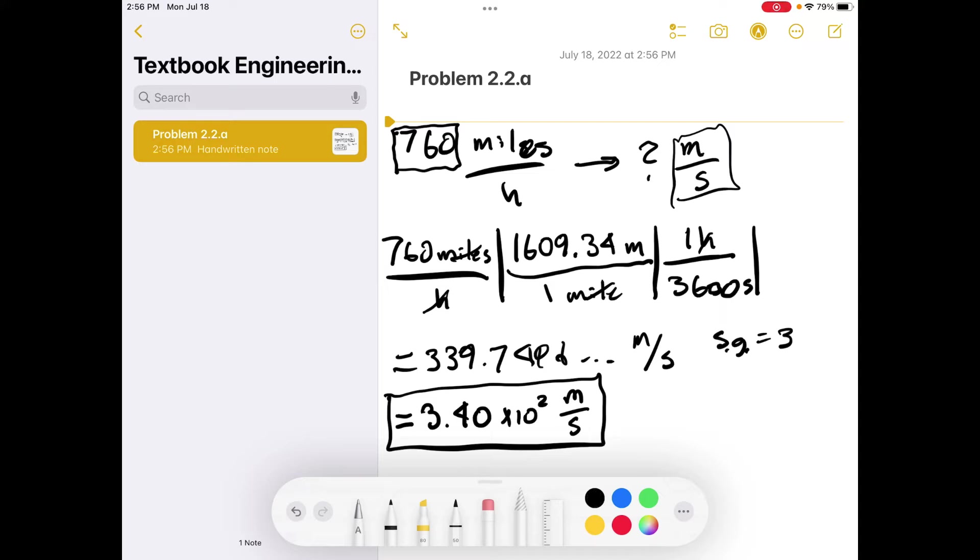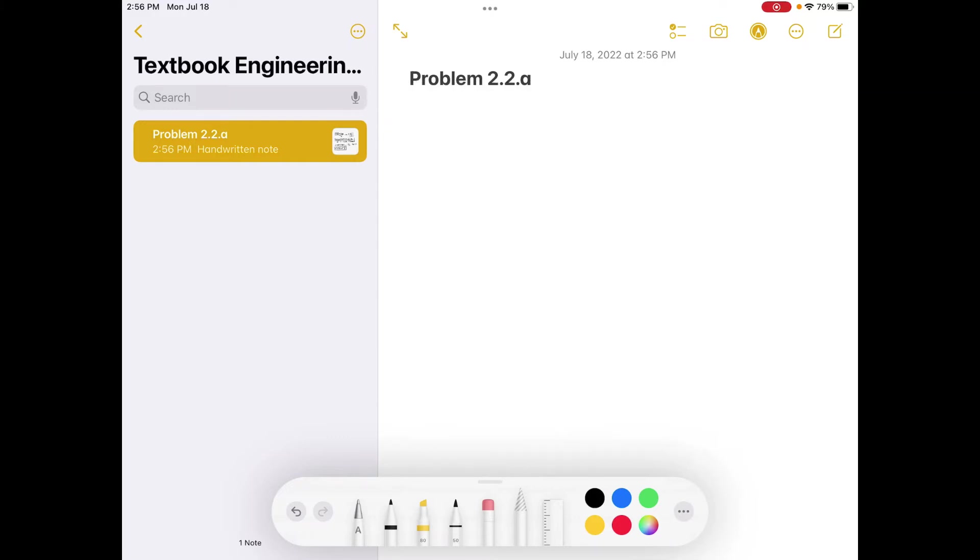Now moving on to part b. Part b, we have 921 kilograms per meter cubed, so a density conversion. We're going from metric to whatever the United States uses. I use these units but I can't remember what they're called. I don't like using these units, but we can do it.